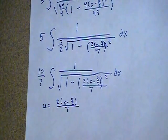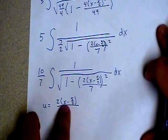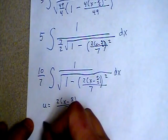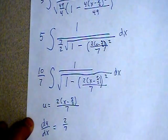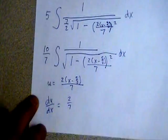Now if you think about distributing 2 over 7 into this set of grouping symbols, your derivative, du dx is just going to be the coefficient of the x to the first, it's just going to be 2 sevenths.